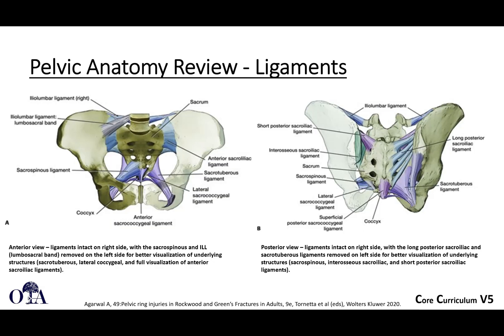Going through the ligaments: anteriorly, you have the pubic symphysis, the anterior SI joint, and the ileal lumbar ligament. The pelvic floor includes the sacrotuberous and sacrospinous ligaments. In the posterior view, you see the posterior SI ligaments, which are particularly strong, as well as the sacrotuberous, sacrospinous, and ileal lumbar ligaments.